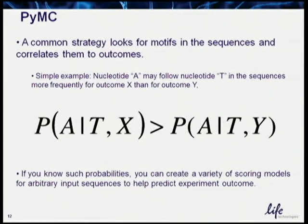A common strategy is to look for motifs in the sequences and correlate those motifs to outcomes. For example, the probability of observing an A after a T in outcome X might be greater than in outcome Y. If we know these probabilities, we can create scoring models to separate those two classes.